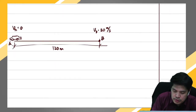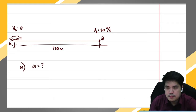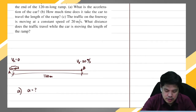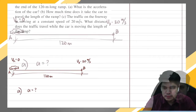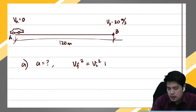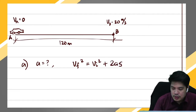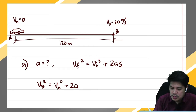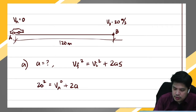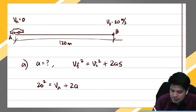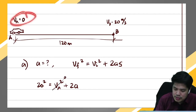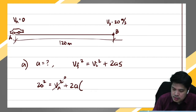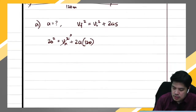For letter a, we are asked for the acceleration of the car. What formula involves initial velocity, final velocity, and distance in getting acceleration? We'll use the third formula: vf² = vi² + 2·a·s. The velocity at B squared equals the velocity at A squared plus 2 times acceleration times the total distance. Velocity at B is 20, velocity at A is zero, distance is 120 meters.